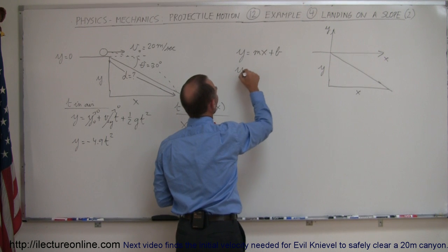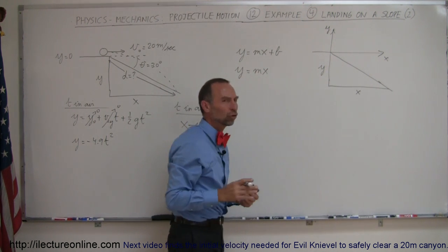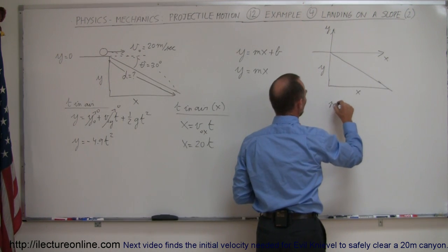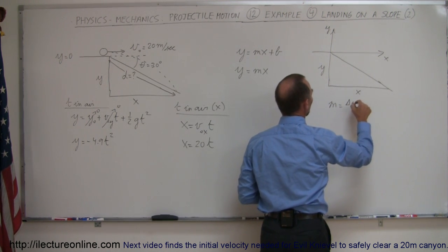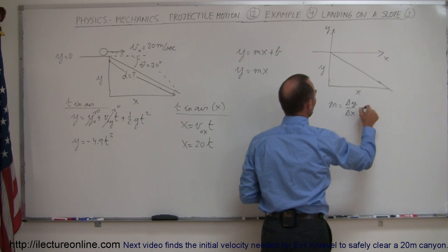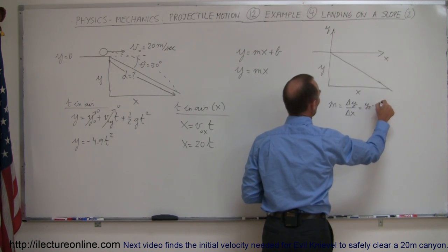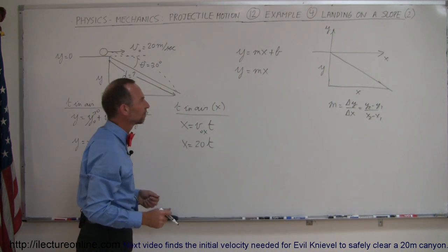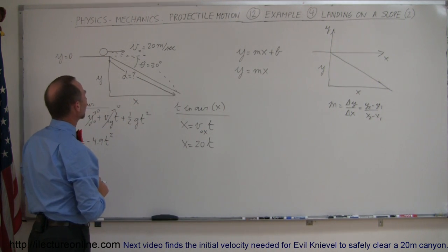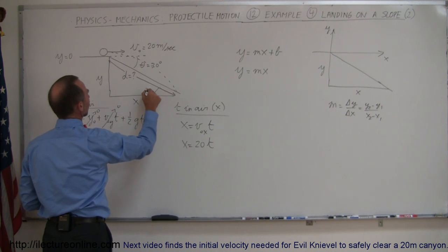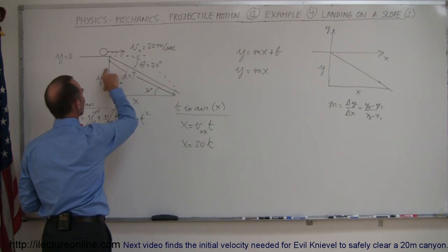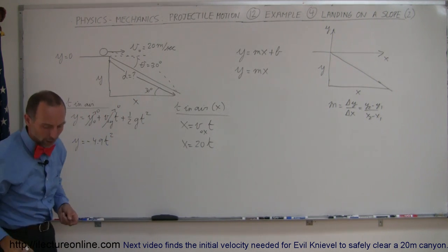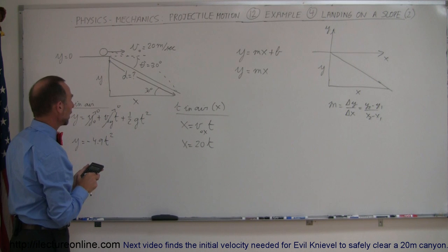And the slope by definition, m, is of course equal to the change in the y over the change in the x, and so that would be y2 minus y1 over x2 minus x1. So what is the change in y and what's the change in x? We have an angle here which is 30 degrees. We have the opposite side, we have the adjacent side. If we assume the hypotenuse to be 1, we can then find the relation between x and y.